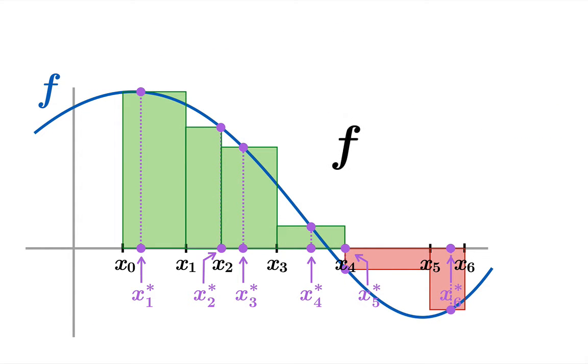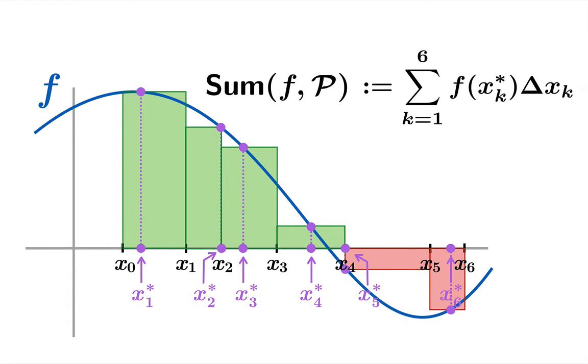Now the reason we might want to have this kind of notation is because then if you have a function f and you have all the information in your decorated partition wrapped up in something we're calling P then this notation could be used for the Riemann sum and if you wanted to spell it out explicitly it would look like this.